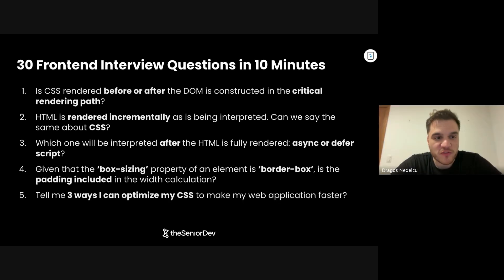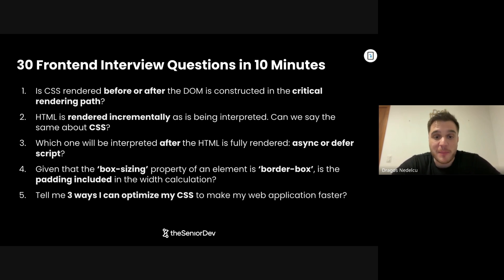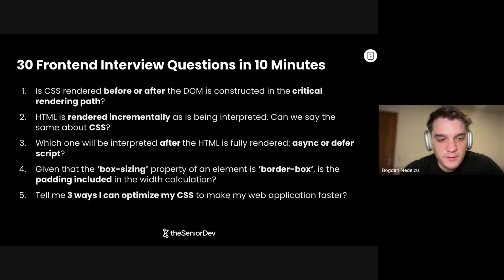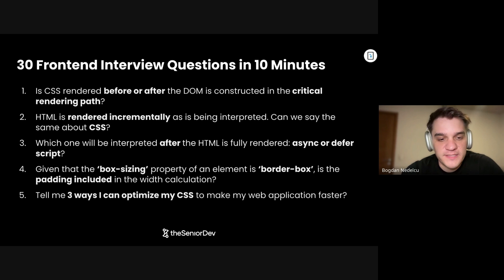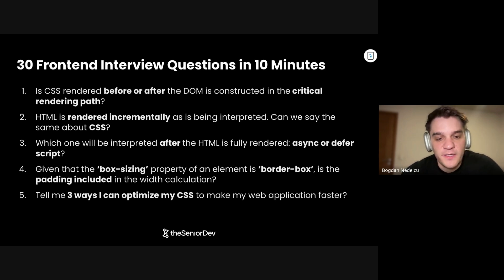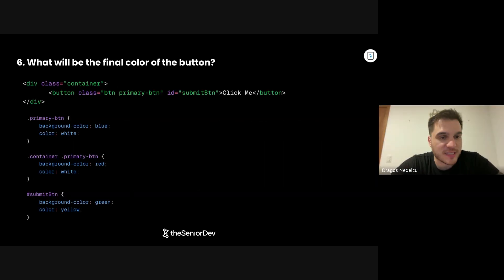On to question number five: Tell me three ways I can optimize my CSS to make my web application faster. Number one, you could clean it up with the coverage tool from the browser to make sure you're shipping only styles that are used. Number two would be compression and caching. And number three would be critical CSS — basically extracting only the CSS you need for the first render and loading the rest after the initial render.